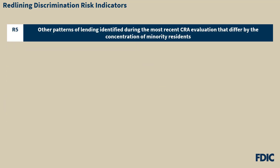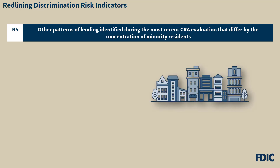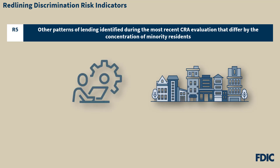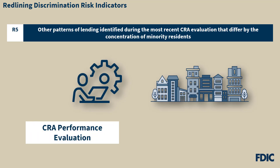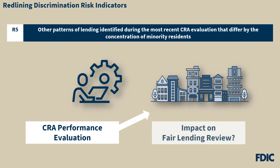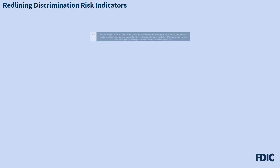R5 states other patterns of lending identified during the most recent CRA performance evaluation that differ by the concentration of minority residents. The CRA evaluation is often conducted concurrently with the consumer compliance examination, and examiners evaluate fair lending risk as part of every compliance examination. The examiner performing the fair lending review may be able to obtain information about the bank's activities from the CRA performance evaluation, and assess whether any CRA performance issues impact the fair lending review.